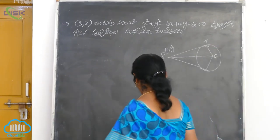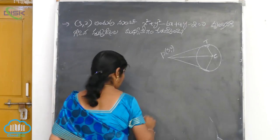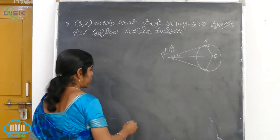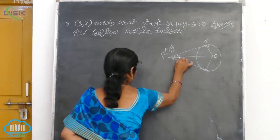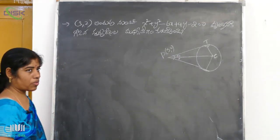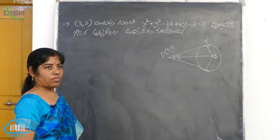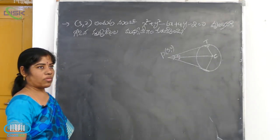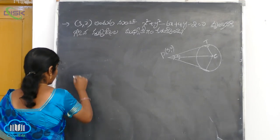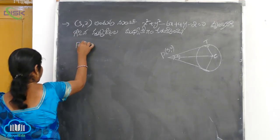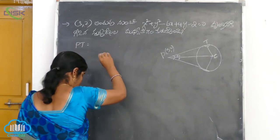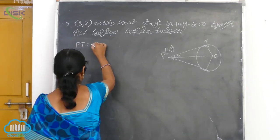Okay, so here we can see the angle. We can see the angle here. So P and A2 — when did P and A2? P and A2. We can see Pt. So Pt is equal to square root of S11.